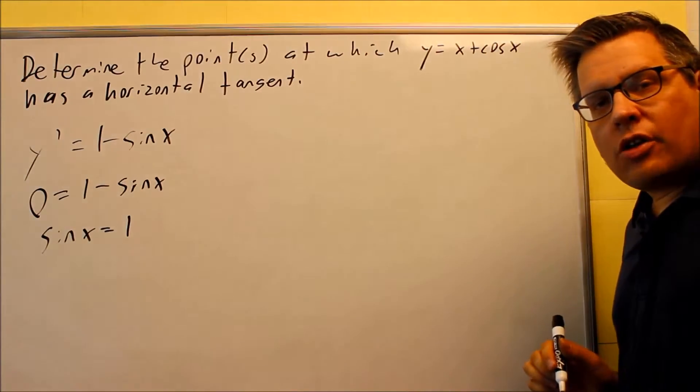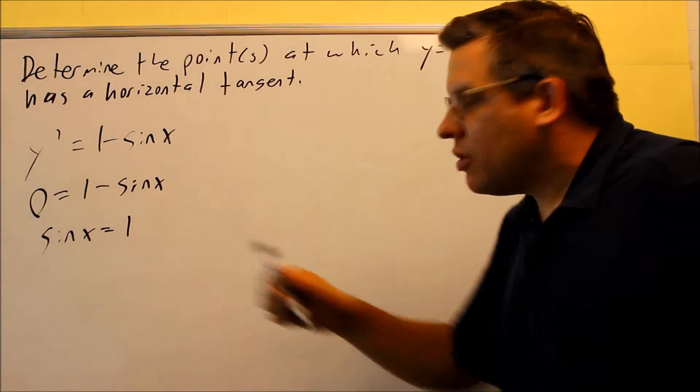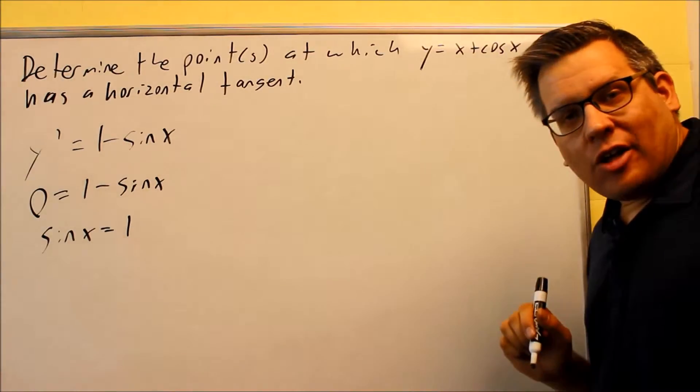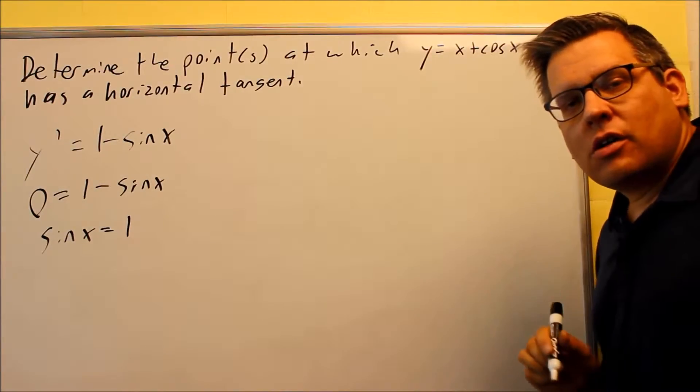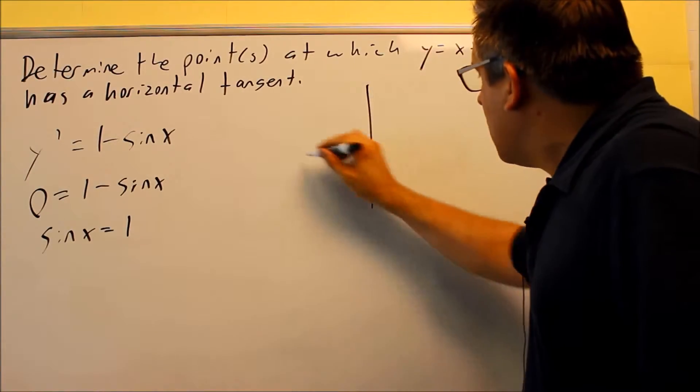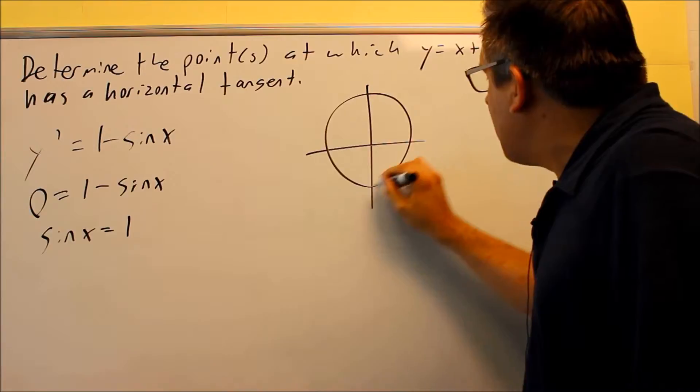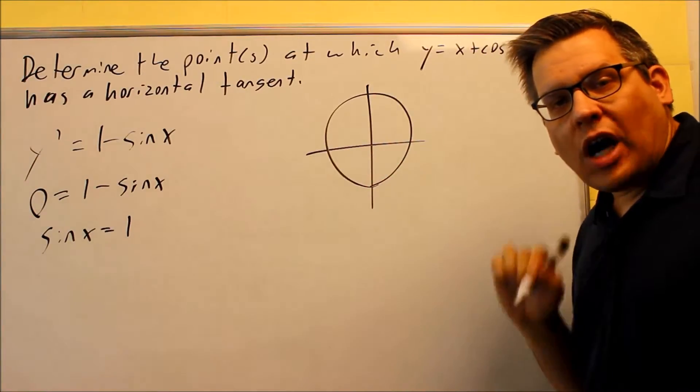At this point, you want to look at your unit circle and find any place where the y-value equals one. Remember, sine x represents a y-value and cosine is an x-value. We're looking for any place on the unit circle where the y-value is one.